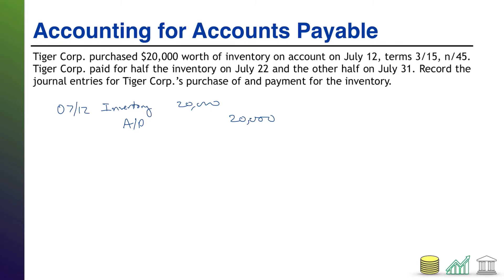Next date in this problem is July 22nd. It says Tiger Corps paid for half of the inventory. Absent other information, a payment would typically look like this: debit your payable because it's going down, credit cash because you're paying for it — cash is going down. And if we're paying for half, this would be for $10,000.